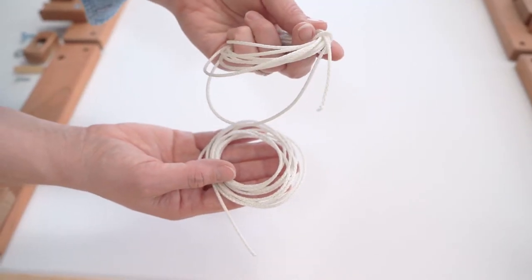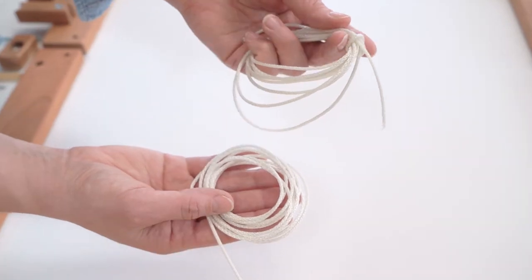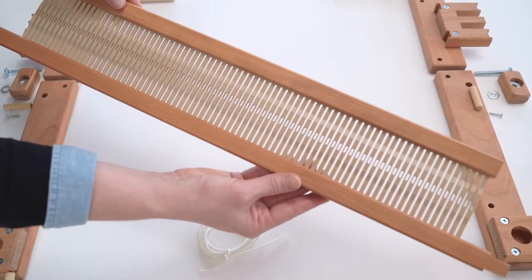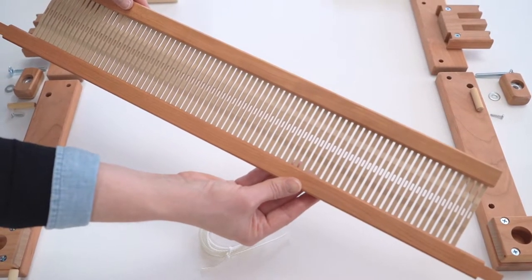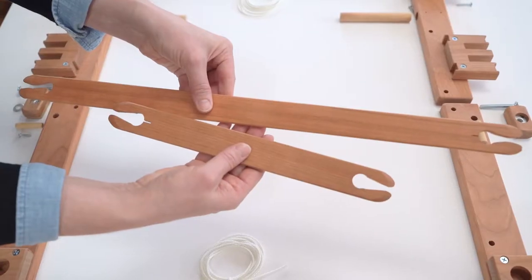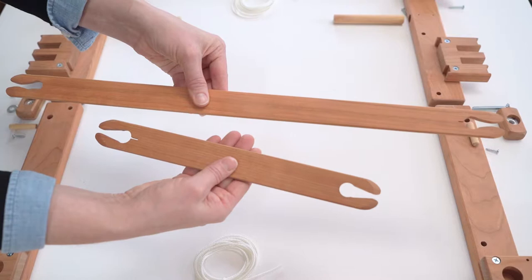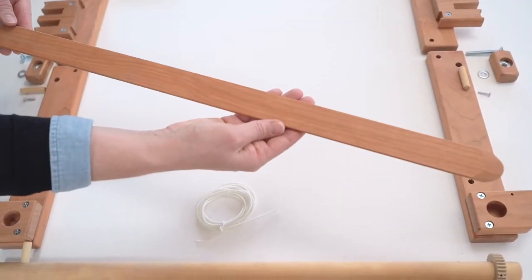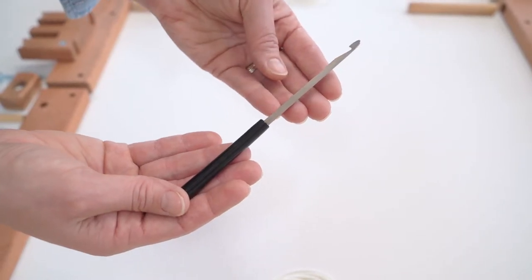And you'll have two tie cords, one for the front, one for the back, and then it also comes with one eight dent heddle that is at a 20 inch width, two different size stick shuttles, one pickup stick, and then a hook that's for warping the loom.